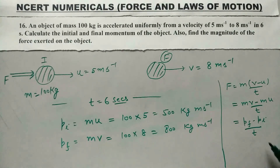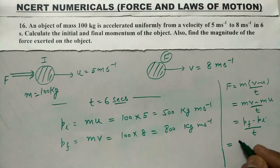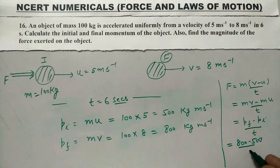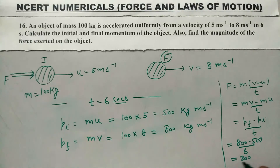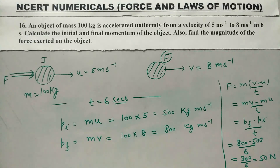यहाँ पर final momentum minus initial momentum है, तो force की value आएगी: F = (800 − 500) / 6 = 300 / 6 = 50 Newton। (So force = (800 − 500)/6 = 300/6 = 50 Newton.)